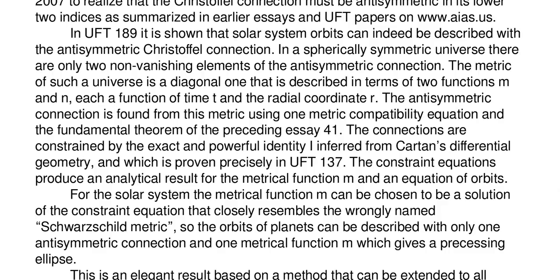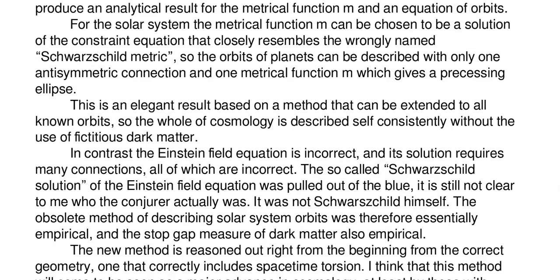The constraint equations produce an analytical result for the metric functions M and N and an equation of orbits. For the solar system the metric function M can be chosen to be a solution of the constraint equation that closely resembles the wrongly named Schwarzschild metric. So the orbits of planets can be described with only one anti-symmetric connection and one metric function M, which gives a precessing ellipse. This is an elegant result based on a method that can be extended to all known orbits, so the whole of cosmology is described self-consistently without the use of fictitious dark matter.